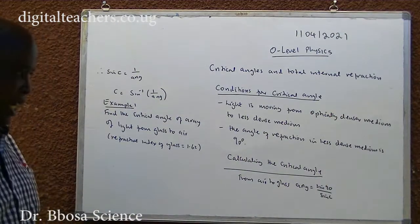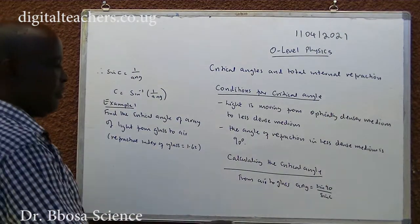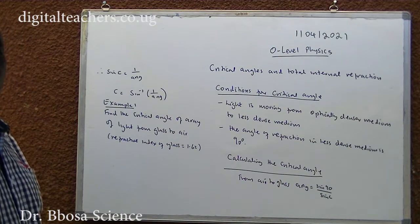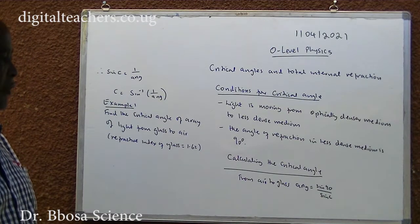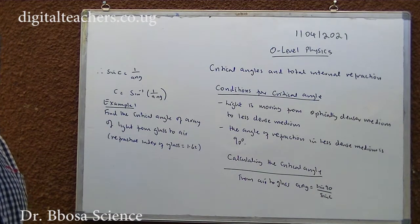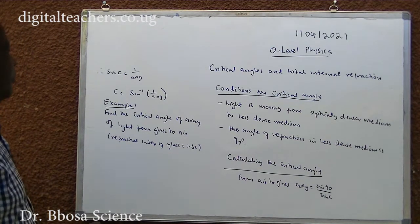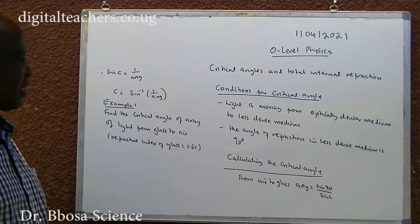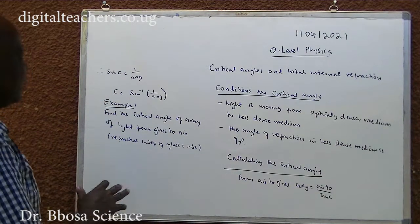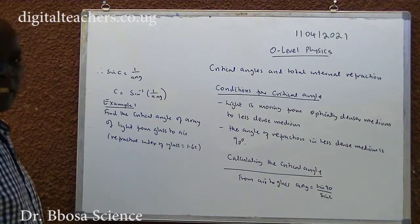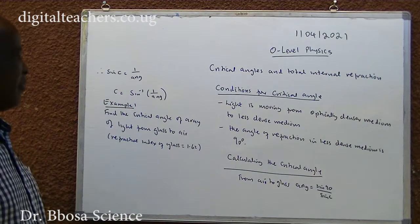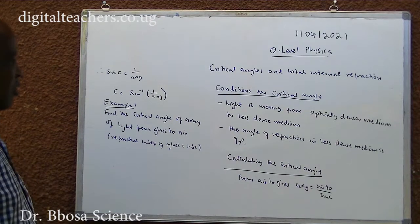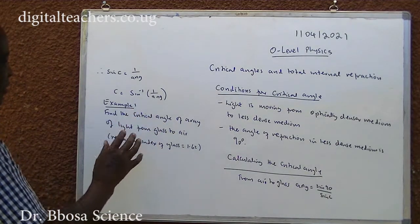Calculating the critical angle: The refractive index is equal to sine 90 over sine C. Therefore, sine C is equal to 1 over the refractive index, and C is equal to sine inverse of the reciprocal of the refractive index.